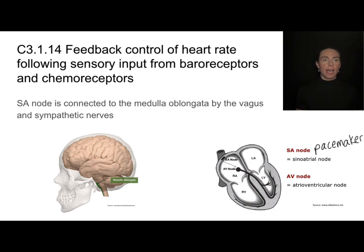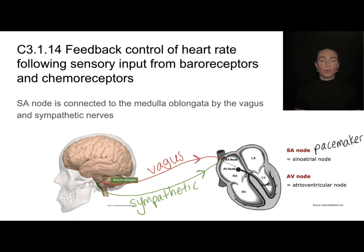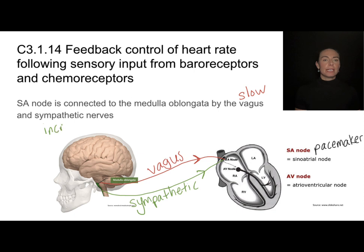One nerve is called the vagus nerve, and the other is called the sympathetic nerve. Both travel from the brain to the SA node and can only transmit impulses toward the SA node. But why two different nerves going the same direction to the same place? Because they cause different effects: the vagus nerve causes the SA node to slow down the heart rate, while the sympathetic nerve causes an increase in heart rate.